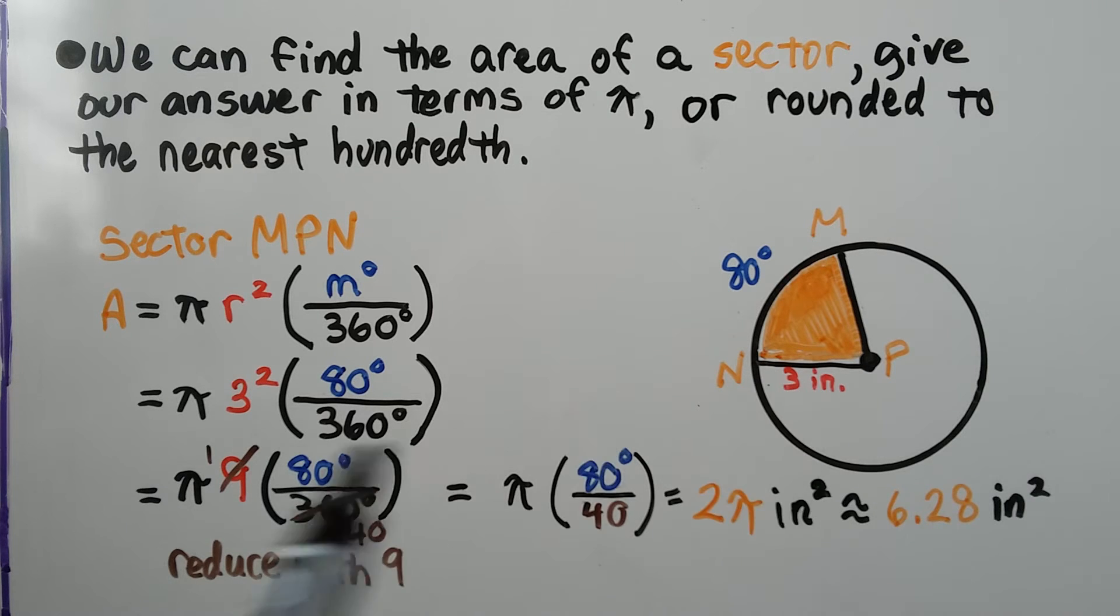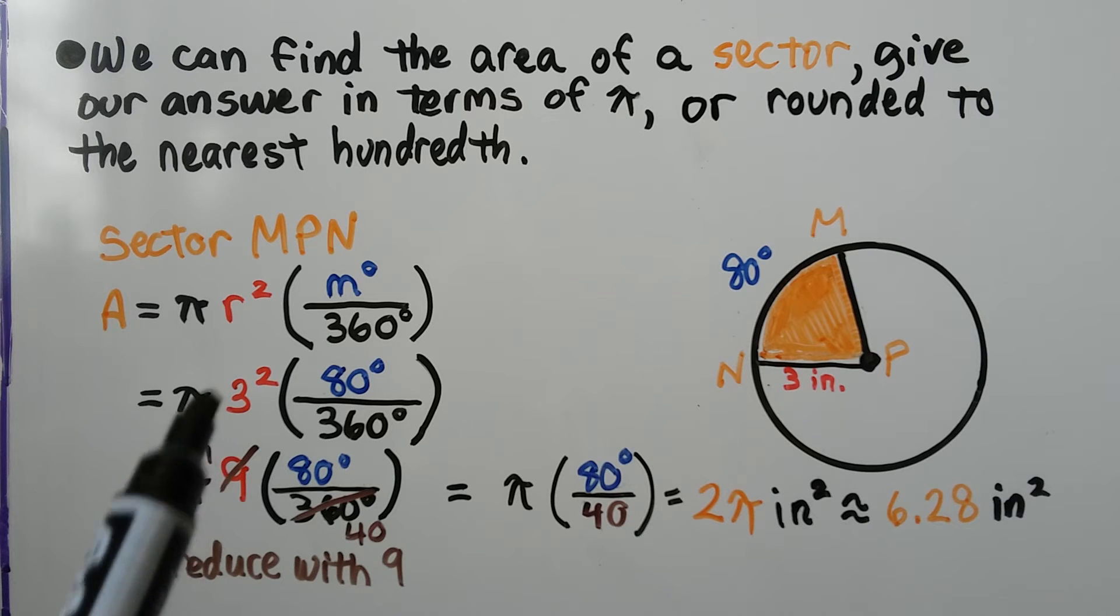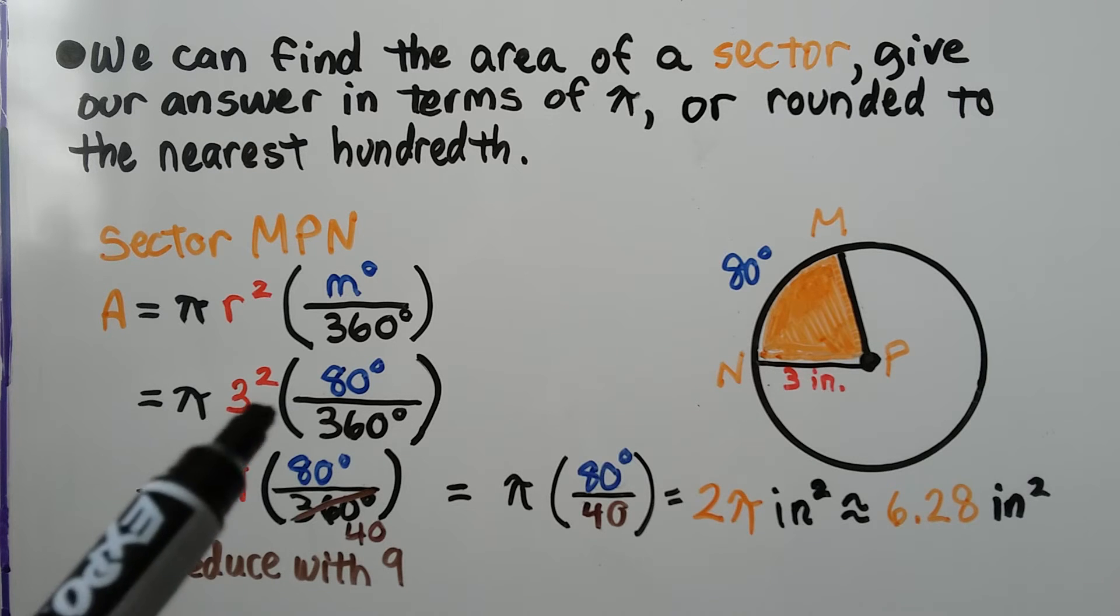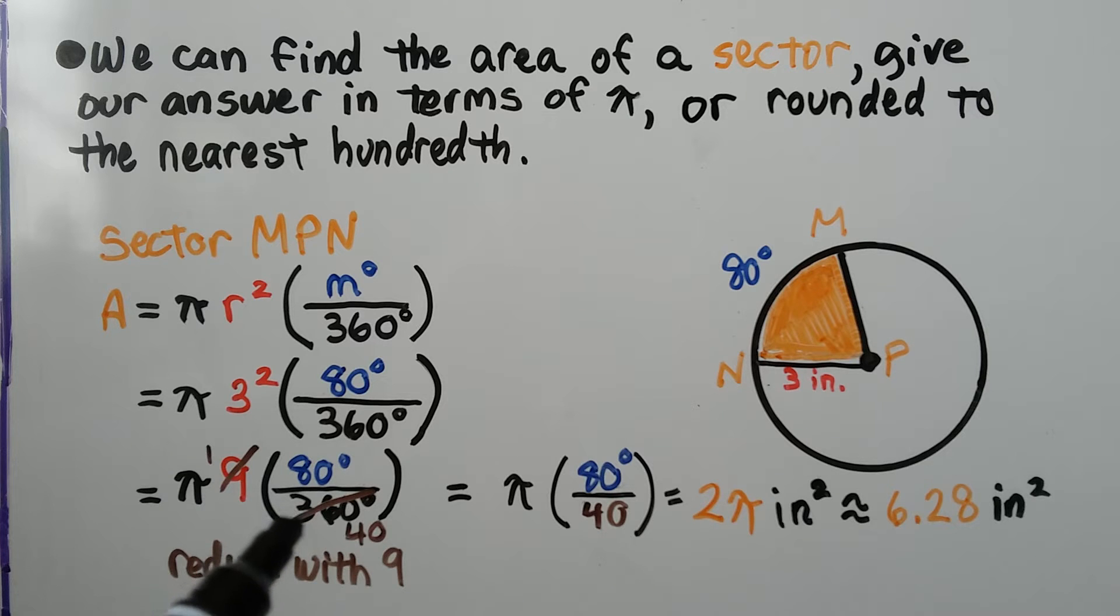We see the radius is three inches, so we have three squared. We can see this is 80 degrees, we put that in place of m, and we can actually reduce with nine. Three squared is a nine, and this nine can go into the 360.